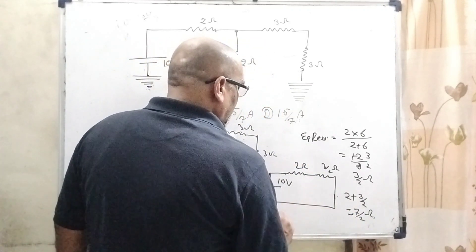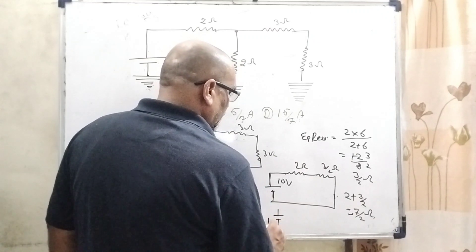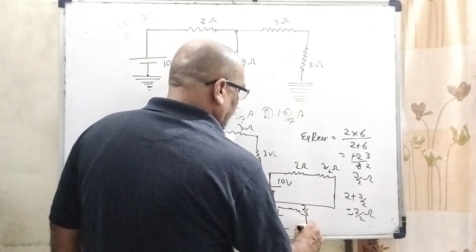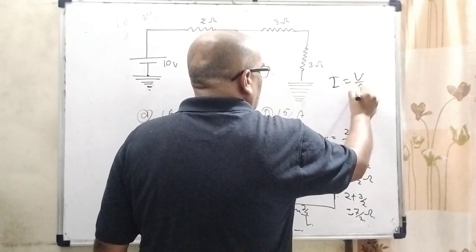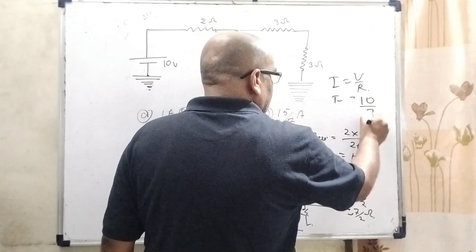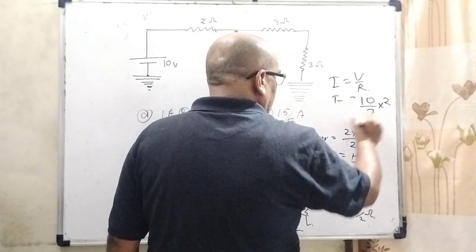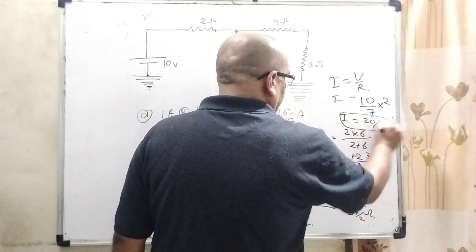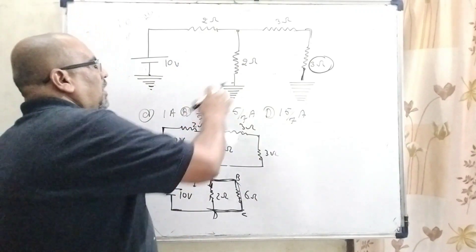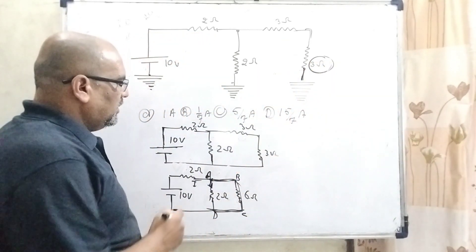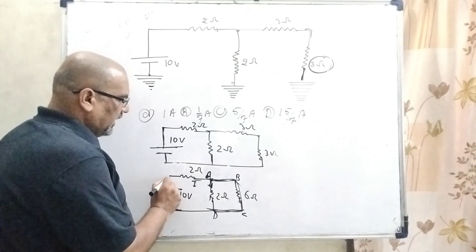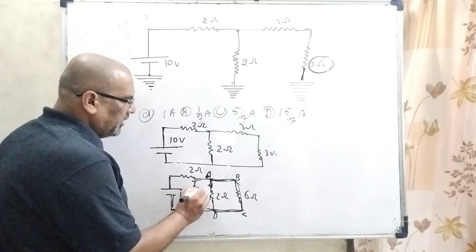So here we get equivalent resistance of 7 by 2 ohm and 10 volt input battery. Therefore, what is the amount of current? I equals V by R, that is 10 divided by 7 by 2, which gives I equal to 20 by 7 ampere as the net current.